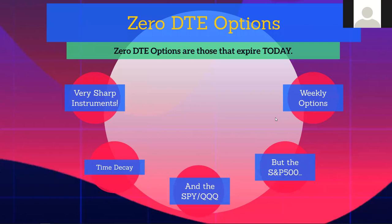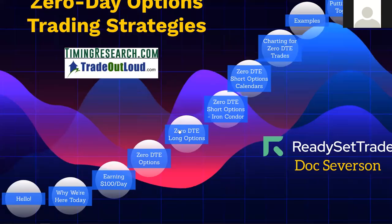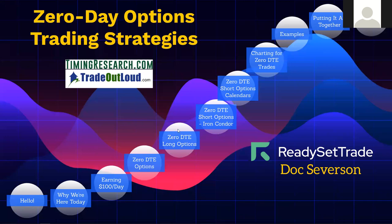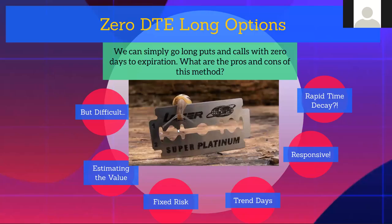Zero DTE options expire on the S&P three times a week — Monday, Wednesday, Friday — and we can write strategies against them. What kind of strategies? First, we can do long options — this is how most people start trading options, finding out about calls and puts. Unfortunately, it's the most difficult way to win a trade for a host of reasons. It's the simplest way to enter, but the most difficult way to get a positive result.